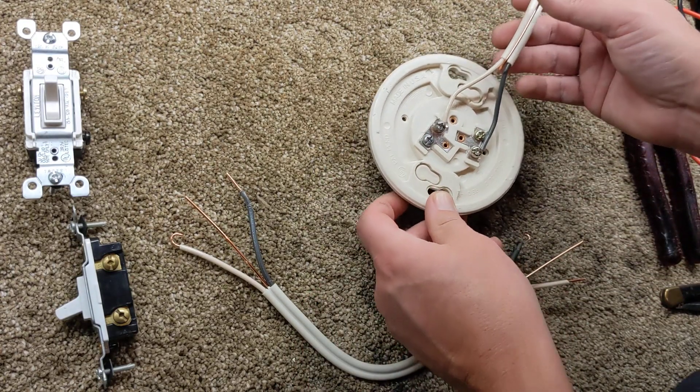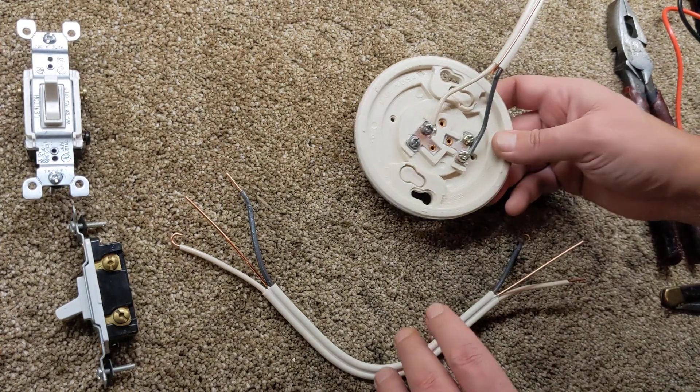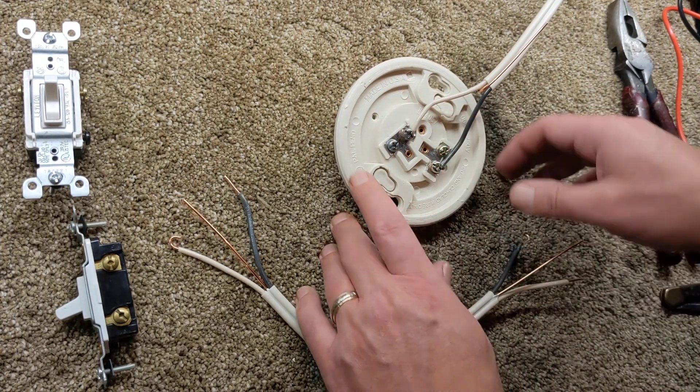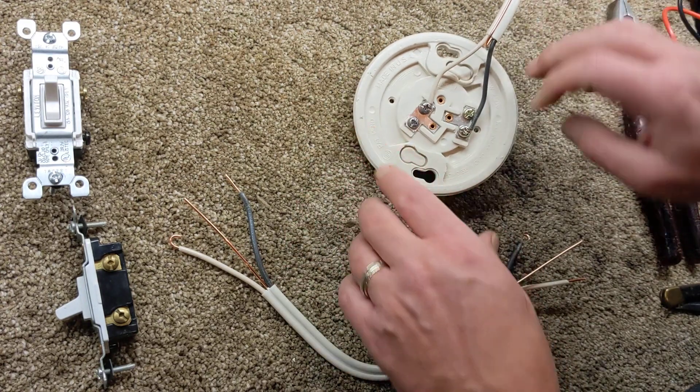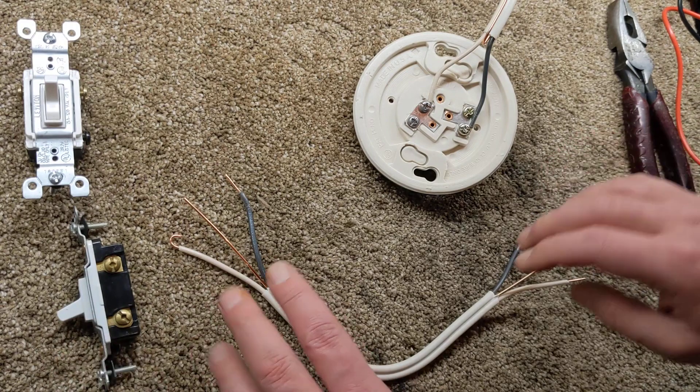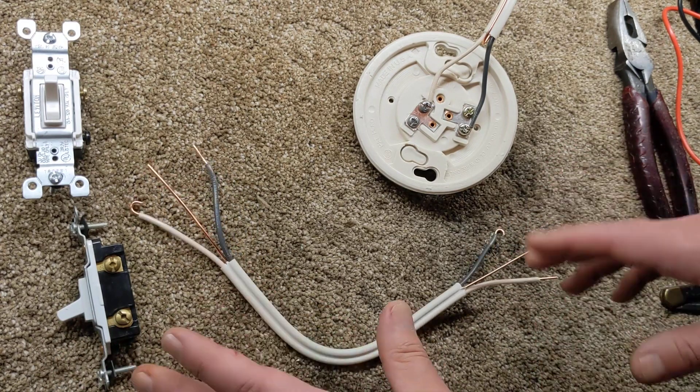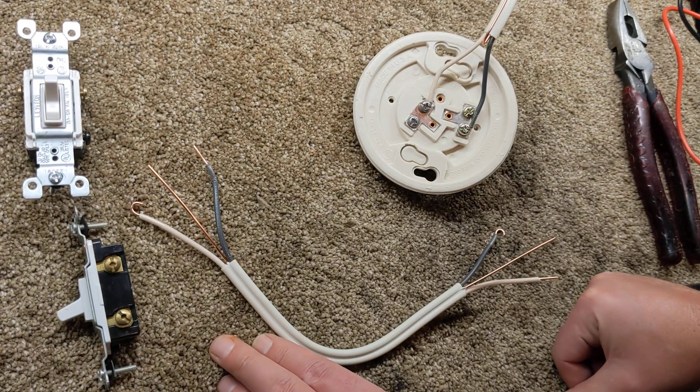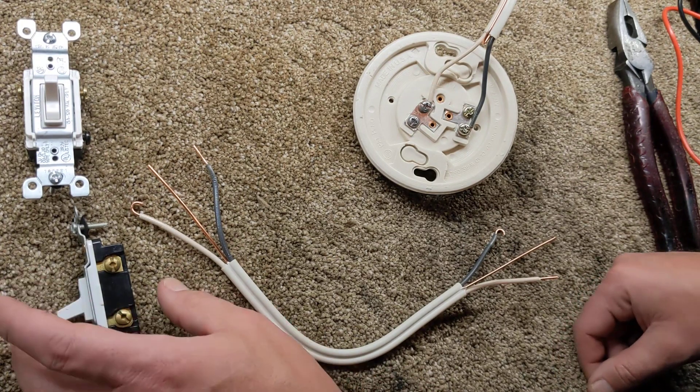You have your hot and your neutral coming into any light with constant power. So now we want to add a switch. This will represent your wire that you're running down the wall, wherever you're doing it, whether in your basement, wherever you're putting one in.